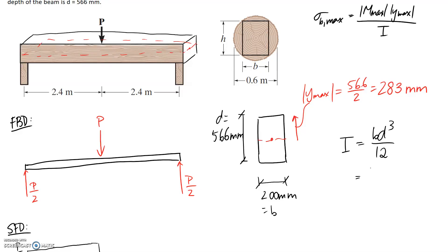Substituting in, if we do it in millimeters, it's going to be 200 by 566 cubed divided by 12, and we come out with an I value of 3.022 by 10 to the 9, and we substitute it in millimeters, so the units are millimeters to the power of 4.